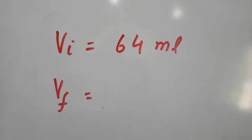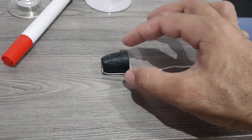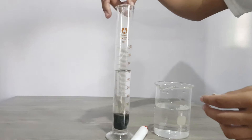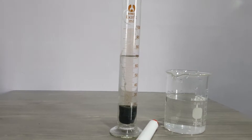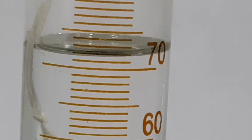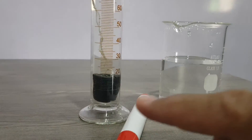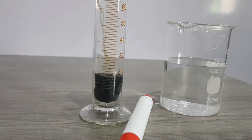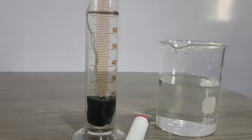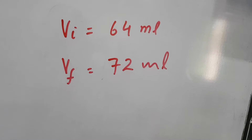Now we will find the volume of this cork. First, tie it with the help of a thread, then lower the cork into the water so it sinks. Note the volume — I think it is 72 ml. This is the final volume after putting the cork into the cylinder. The level of the water has risen because of the cork. This is the final volume: 72 ml.